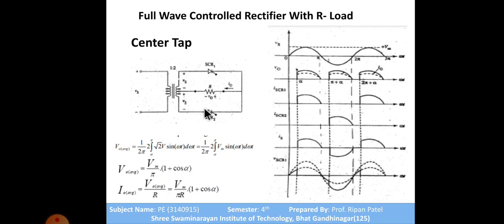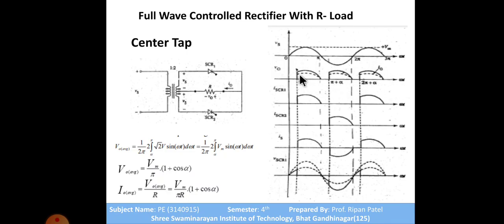From pi plus alpha, SCR2 fires and current flows through SCR2, then through the load. The direction of current through the load is the same, so the output voltage is again positive. At the end of this cycle, current is again zero, SCR2 turns off due to natural commutation, polarity changes again, and the cycle repeats. This gives us the full wave output voltage waveform.